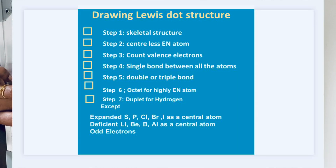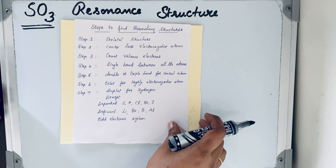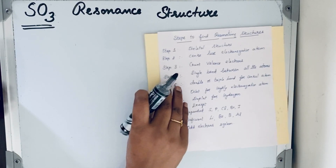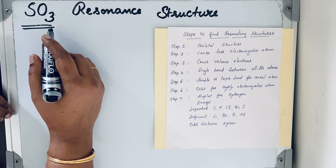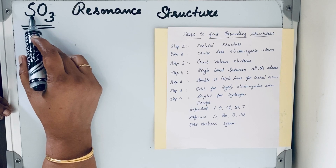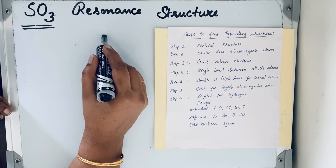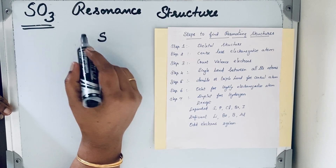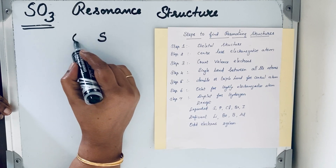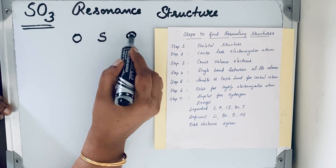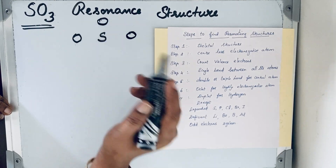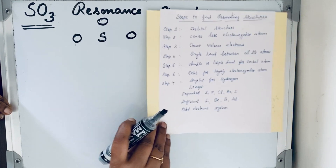Step 1: Draw the skeletal structure. Step 2: While drawing the skeletal structure, the center atom should be the less electronegative atom. In SO3, sulfur is less electronegative, so we draw sulfur in the center with the three oxygens arranged around it.